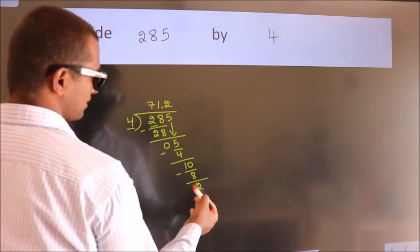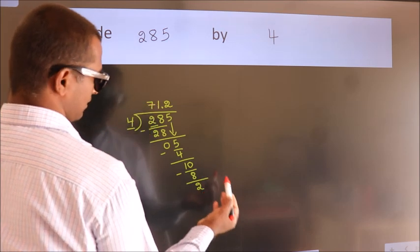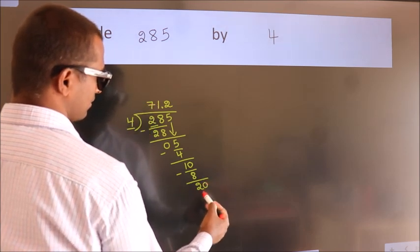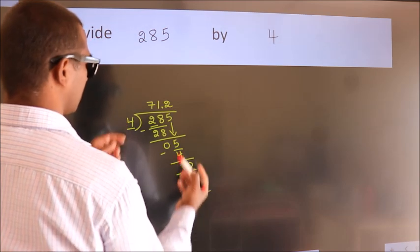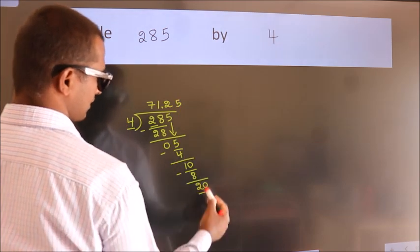After this, we already have the decimal, so directly take 0. So 20. When do we get 20? In the 4 table. 4 times 5 is 20.